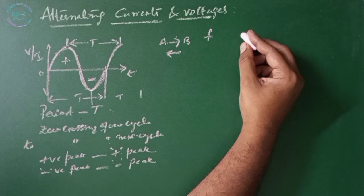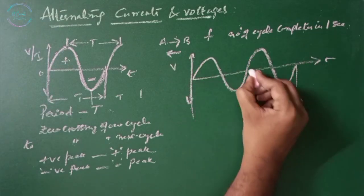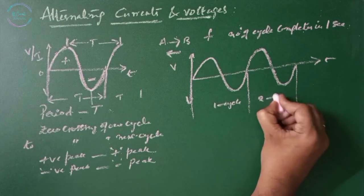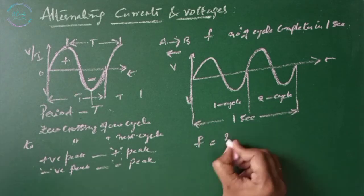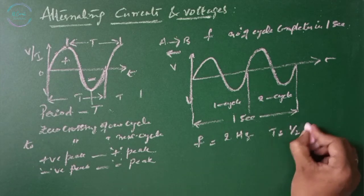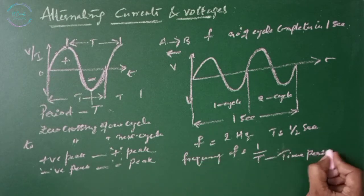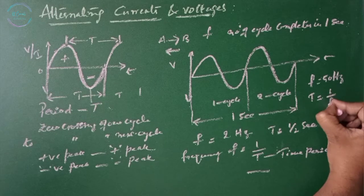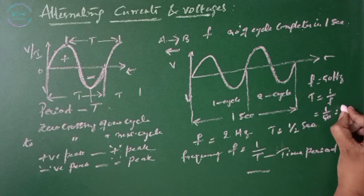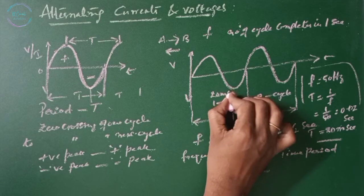The frequency of a wave is defined as the number of cycles that a wave completes in one second. For example, from here to here is one cycle, and this is two cycles. If this is one second, then the frequency equals two Hz, as the time period is half a second. The relation between f and T is: frequency equals one divided by the time period. For Indian standards, the frequency is 50 Hz, so the time period will be 1 by 50, which equals 0.02 seconds or 20 milliseconds to complete one cycle.